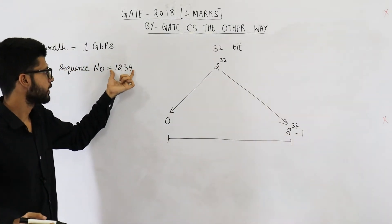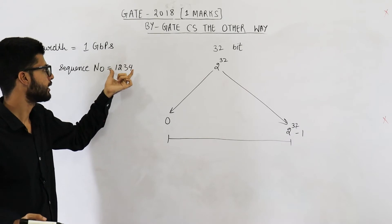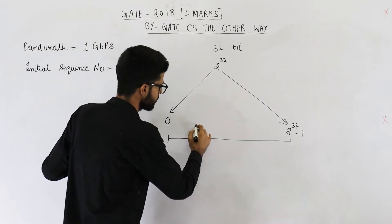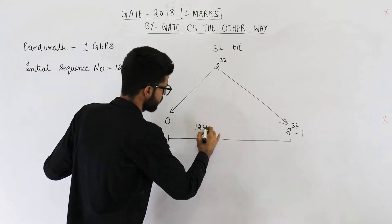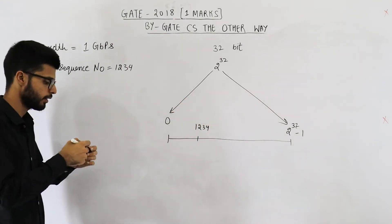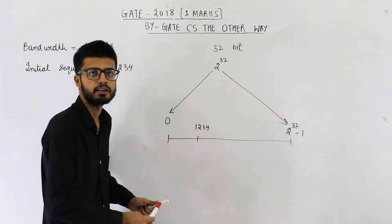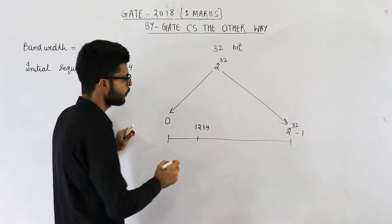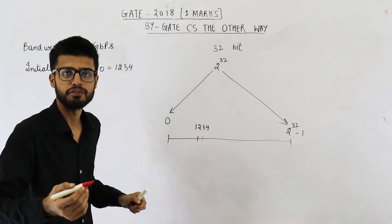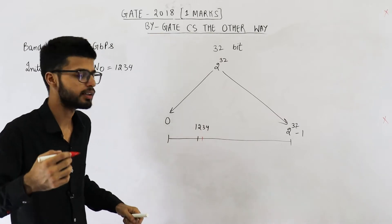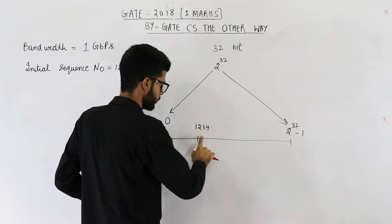So random initial sequence number will be chosen from this range only. So they are saying random initial sequence number that is assigned to the first byte is 1234. Somewhere here we'll be having 1234. Now this is assigned as sequence number to first byte of data. Second byte of data will get sequence number of 1235. Third byte will get 1236, and so on.